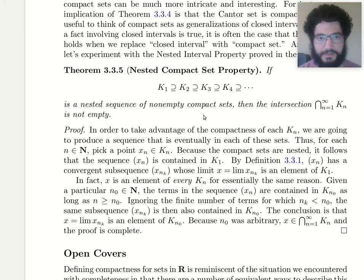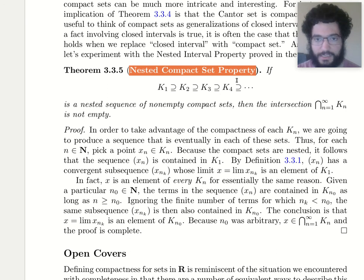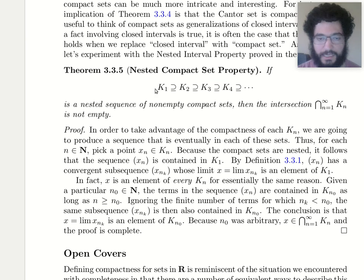And do you remember this theorem, 3-3-5, from our 118a and b textbook by Abbott? This is the nested compact set property, which was like a general version of the nested interval property. If you have a nested sequence of compact sets, and they're all non-empty, then the intersection is non-empty.